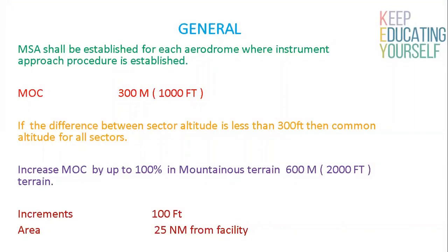Minimum Sector Altitudes shall be established for each aerodrome where instrument approach procedures have been established. Each Minimum Sector Altitude shall be calculated by taking the highest elevation in the sector concerned, adding a clearance of at least 1000 feet and rounding the resulting value up to the next higher 100 feet increment as appropriate.